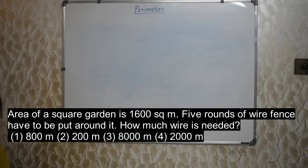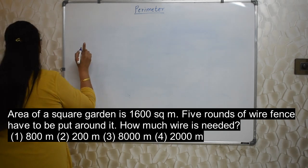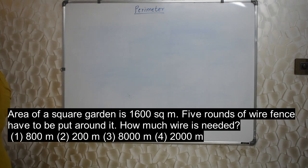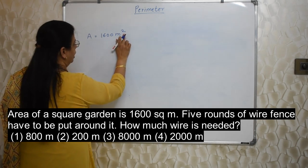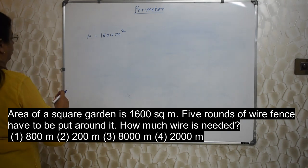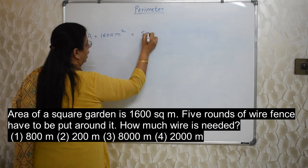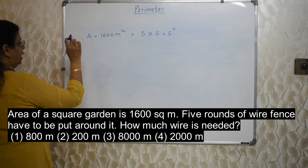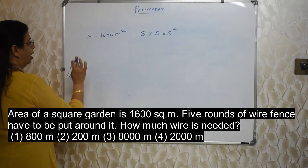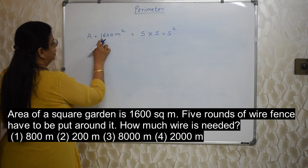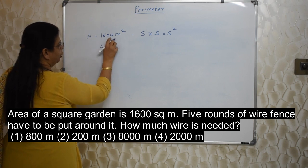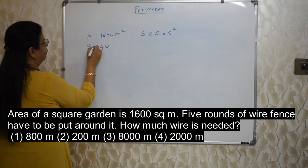Area of a square garden is 1600 meter square. 5 rounds of wire fence have to be put around it. How much wire is needed? Here they have given area of a square garden. Here that word square is very important and area is very important. How much is the area? Area is 1600 meter square. Always in square. Area is always in unit square. And this is the square garden. So, what is the formula of area of a square? Square side into side or side square, right? So, from this area, if I want to find out the side of that particular square garden. How will I do that? I need to find out the square root of this. How to find out the square root of 1600? Very easy. 16 ka square root is 4. 2 zeros ka half zero. Even number of zeros. 2 zeros. So, half of it is 10. So, side is equal to 40 meter.